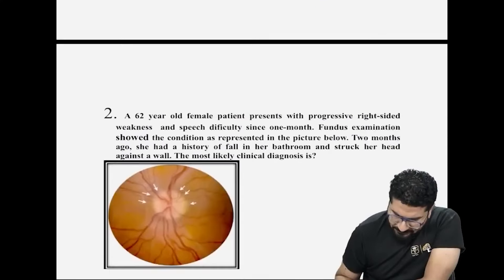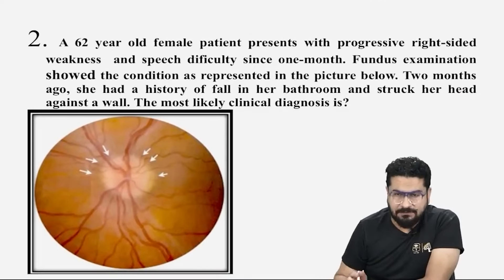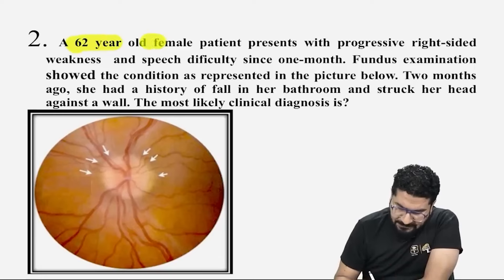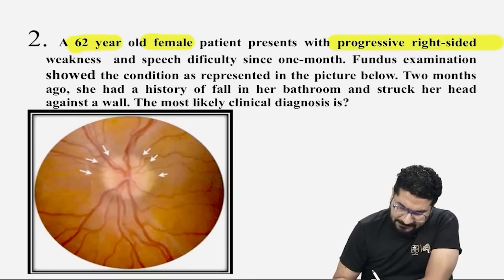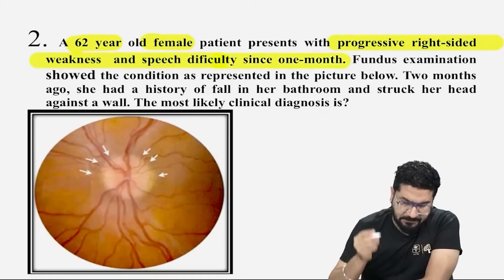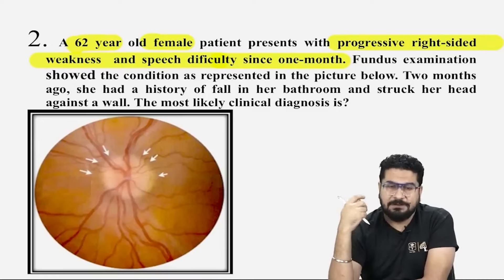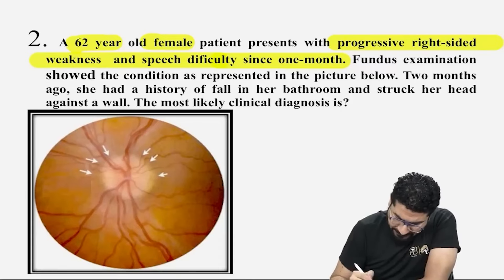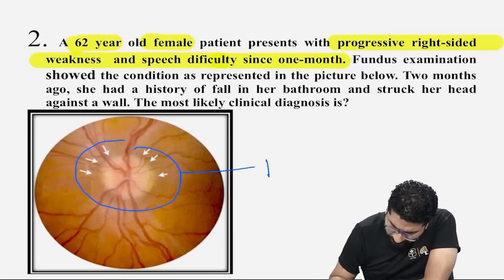Coming to the next question — let us highlight the hints. The clinical case: 62-year-old elderly female with progressively worsening right-sided weakness and speech difficulty since one month — suggesting hemiparesis. Fundus examination shows the condition in the picture below, which is suggestive of papilledema — showing disc edema.